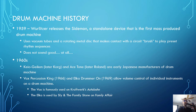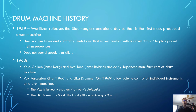In 1959, Wurlitzer released the Sideman, which was a standalone device and the first mass-produced drum machine. The Sideman used vacuum tubes and a rotating metal disc that would make contacts with a brush of metal to complete a circuit and play preset rhythmic sequences. It does not sound good by any standards — it sounds pretty terrible. But it was very popular, and it actually helped to create basic rhythms when you couldn't have a drum section with your home organ.